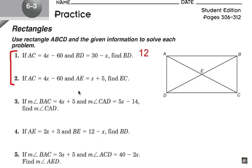Number 2. AC is 4x minus 60. Okay, let's label that. 4x minus 60. AE is x plus 5. Alright. Find EC.